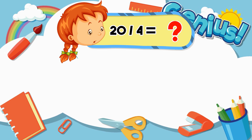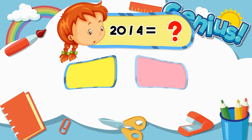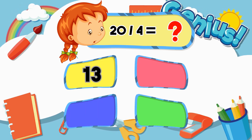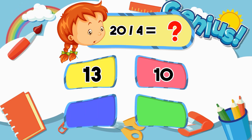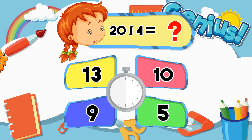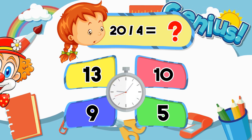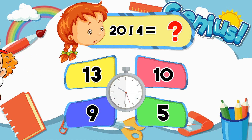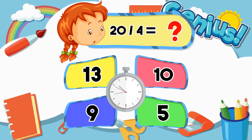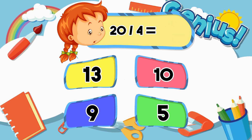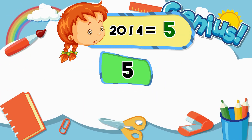What is 20 divided by 4? Options: 13, 10, 9. The correct answer is 5.